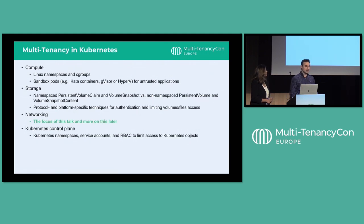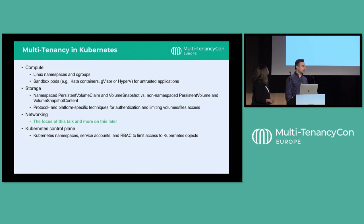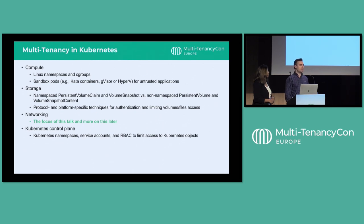As far as state of multi-tenancy in Kubernetes, there are different implementations within and outside of Kubernetes. For compute, Linux namespaces and cgroups are common ways to isolate processes on the same host. For higher isolation, you can run sandbox pods — examples are Kata containers, gVisor, and Hyper-V that provide kernel-level isolation like virtual machines. For storage, there are namespaced and non-namespaced objects, and different protocols like NFS and SMB have different ways of restricting access to volumes and files.